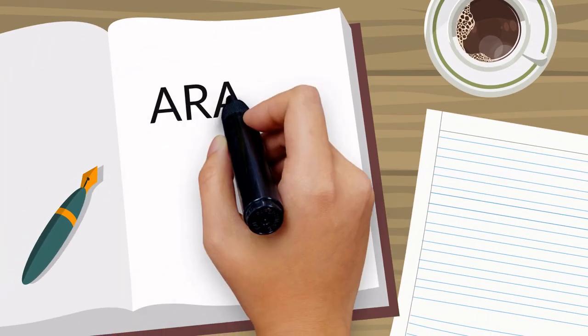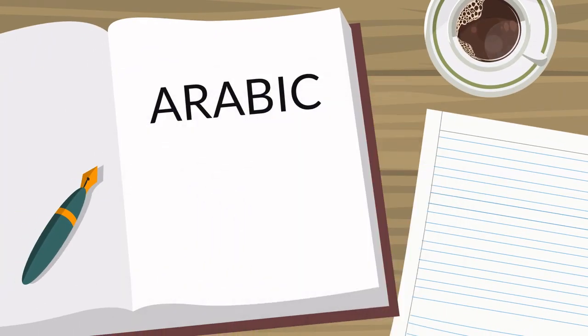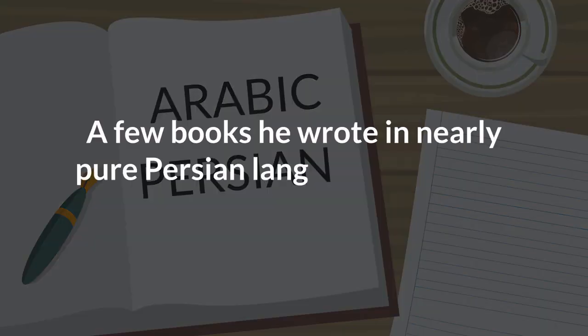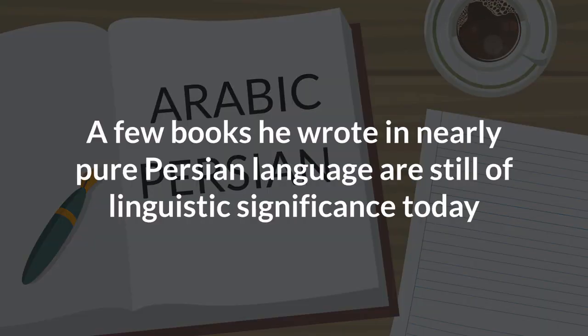Most of his works were written in Arabic, the language of science in the Middle East at the time, and some in Persian. A few books he wrote in nearly pure Persian language are still of linguistic significance today.